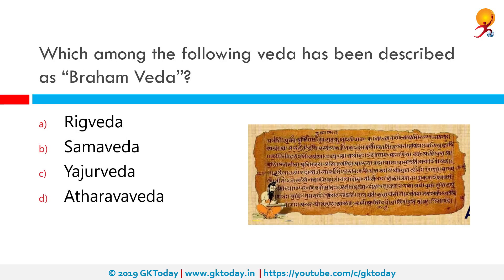Which among the following Vedas has been described as Brahma Veda? The correct answer is Atharvaveda. The Atharvaveda, or knowledge storehouse of Atharvans, covers the procedures of everyday life and is the fourth Veda, but has been a late addition to the Vedic scriptures of Hinduism. The Atharvaveda is also occasionally referred to as Bhrigvangirasas or Brahma Veda, after Bhrigu and Brahma respectively.